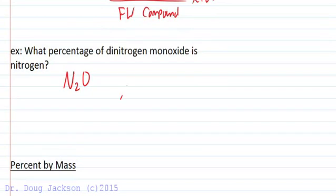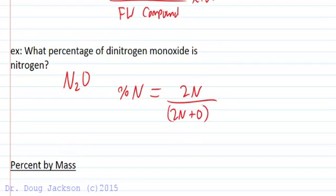The percentage of nitrogen within this is going to be equal to two nitrogen atoms divided by the whole. So double the nitrogen because it's N2, and then the whole N2O weighs two nitrogens plus an oxygen times 100.